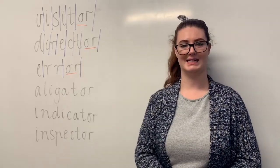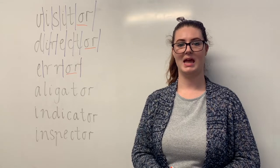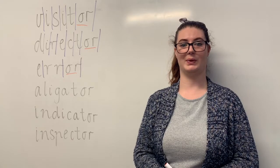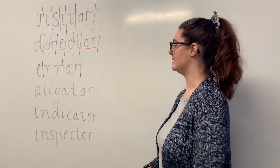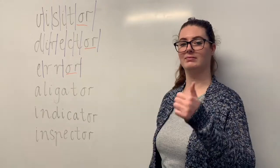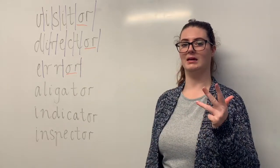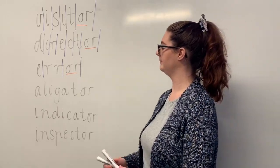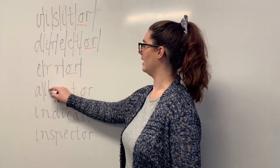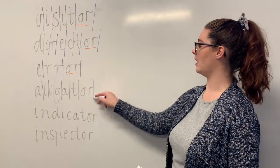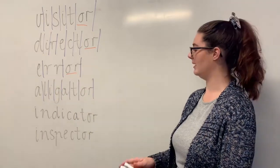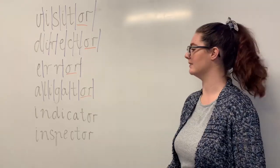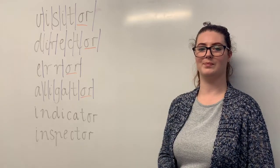Our next word is alligator. Say alligator. In America, alligator is a food source for those in Louisiana since there is an abundance of them. The sounds in alligator are together: A-L-I-G-A-T-O-R. The letters in alligator are A-L-I-G-A-T-O-R. The part we need to remember is the OR digraph making the schwa sound. Alligator. A-L-I-G-A-T-O-R.